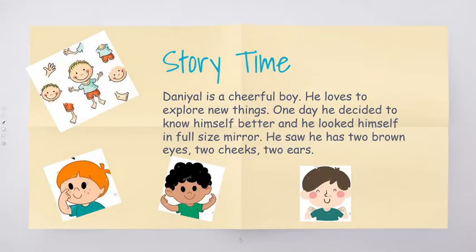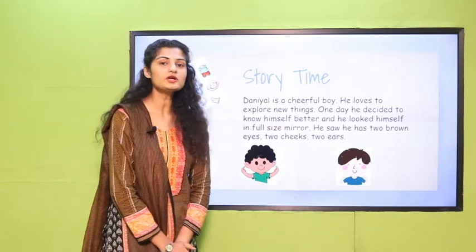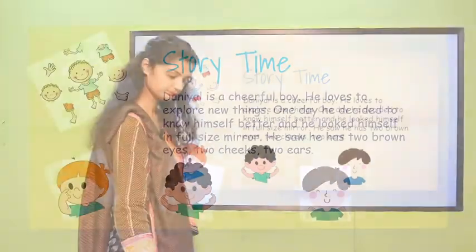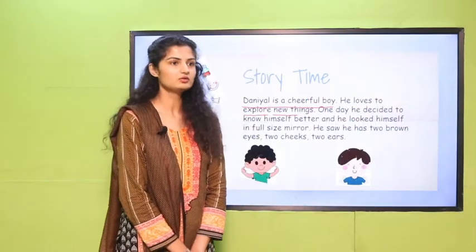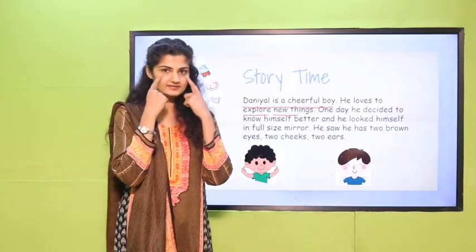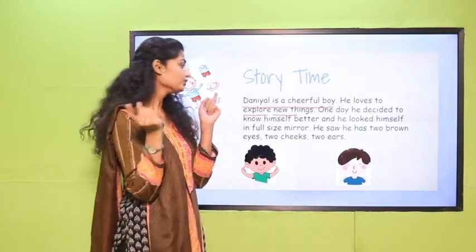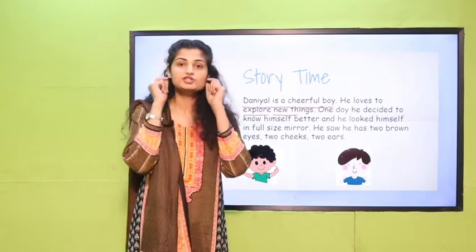Okay playgroups, this is time for the story — the story of number two. Daniel is a cheerful boy. He loves to explore new things. One day he decided to look himself better in the full-size mirror. What did he see? He saw two googly eyes, two rosy cheeks and two ears.